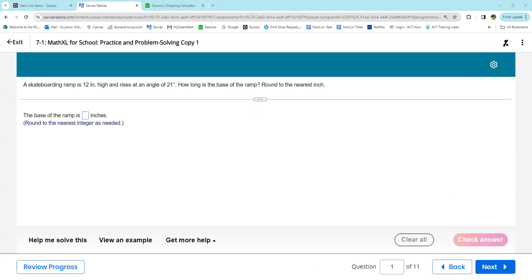All right everybody, I'm finding my right screen here. We are in Savvas Algebra 2 working on a problem: the base of a ramp is how many inches long? A skateboarding ramp is 12 inches high. Let's get a little picture here, 12 inches high.